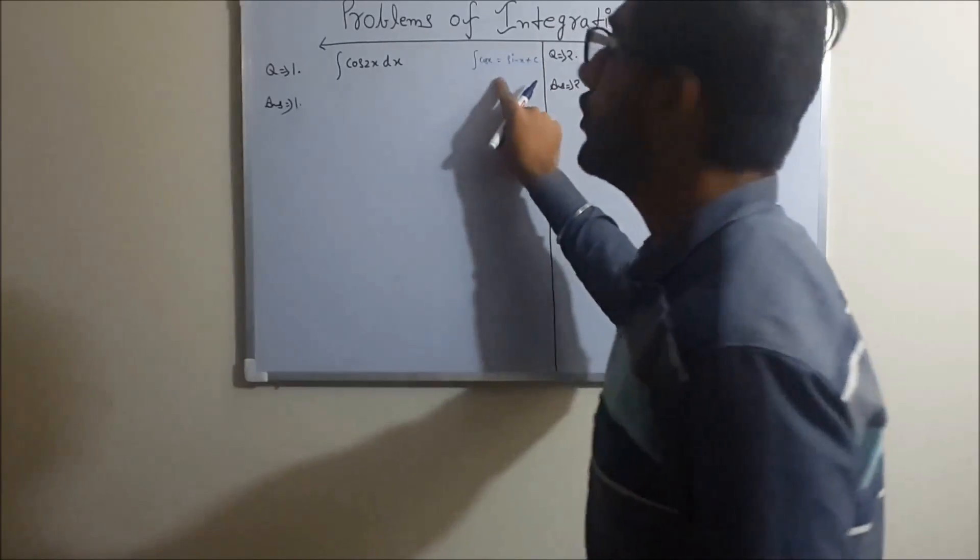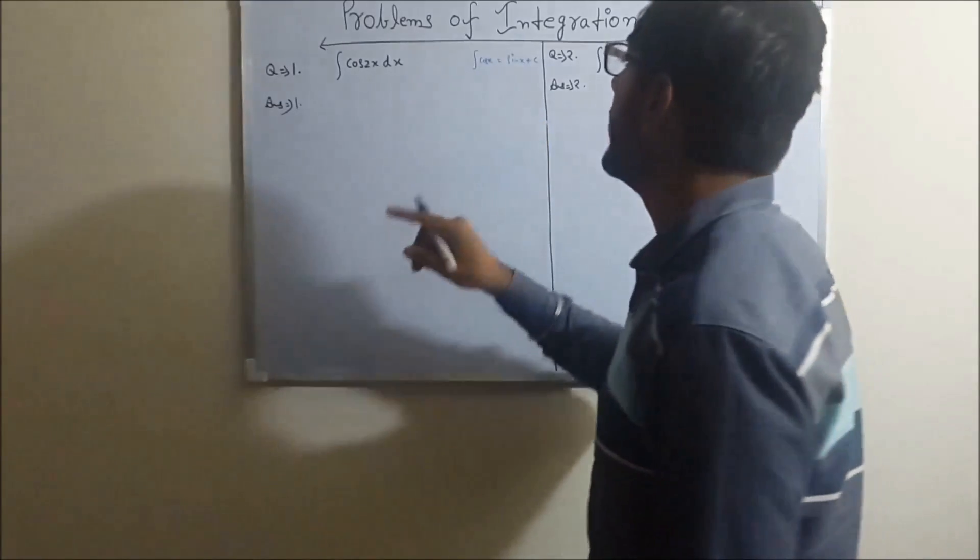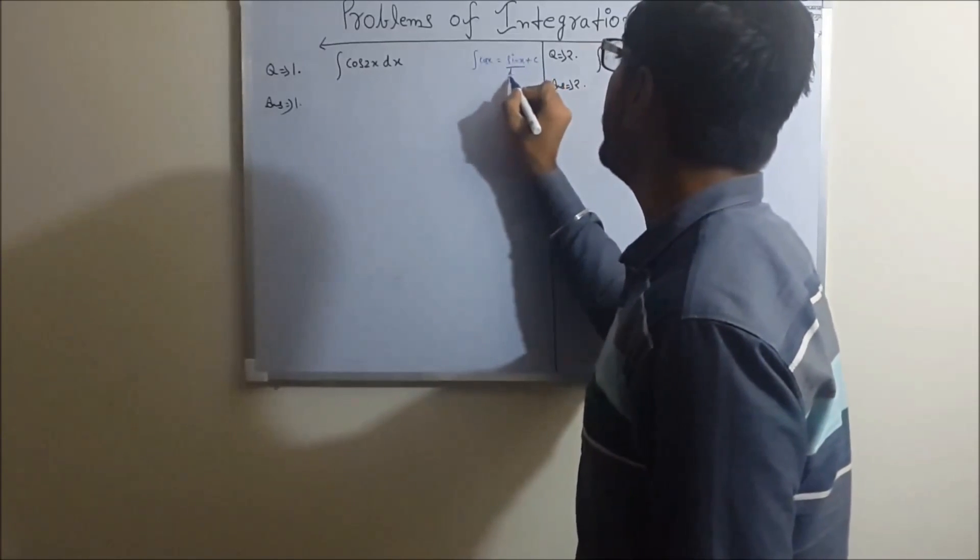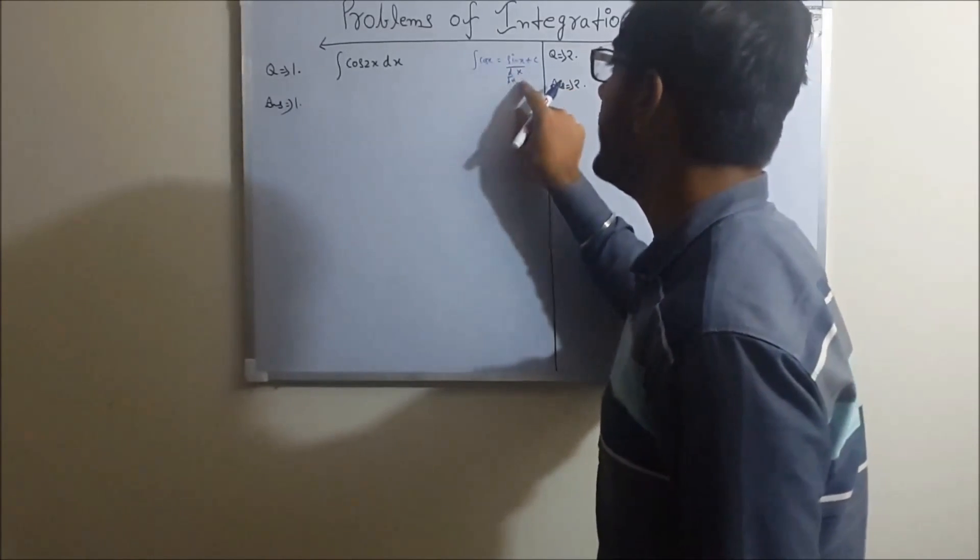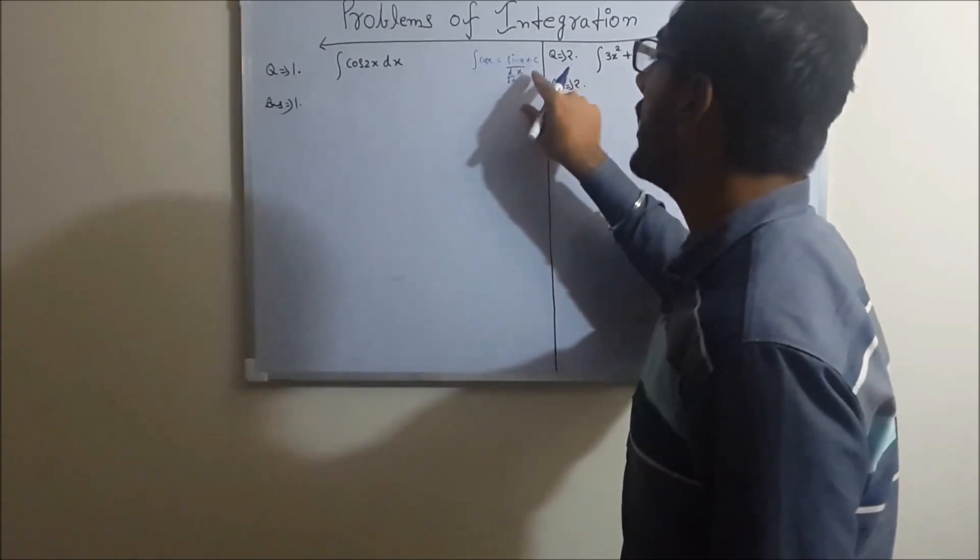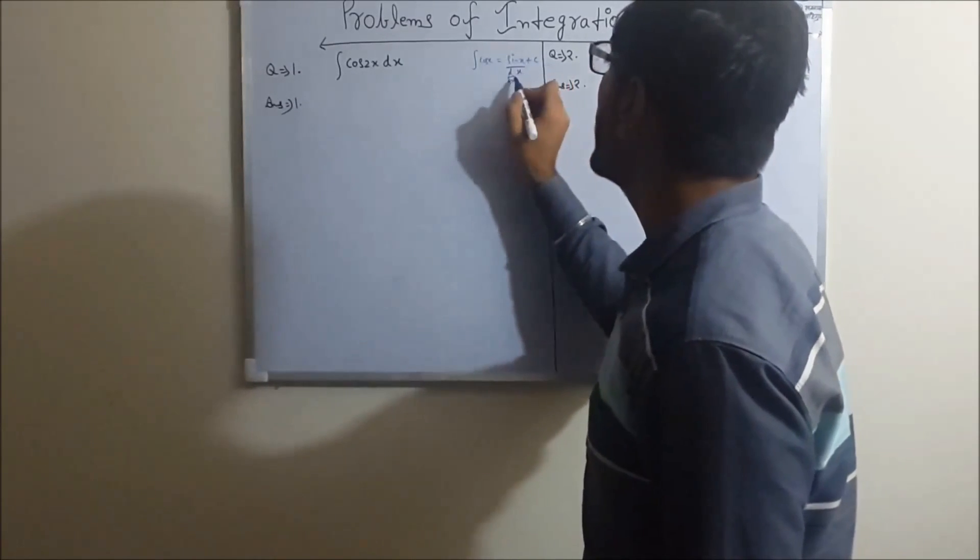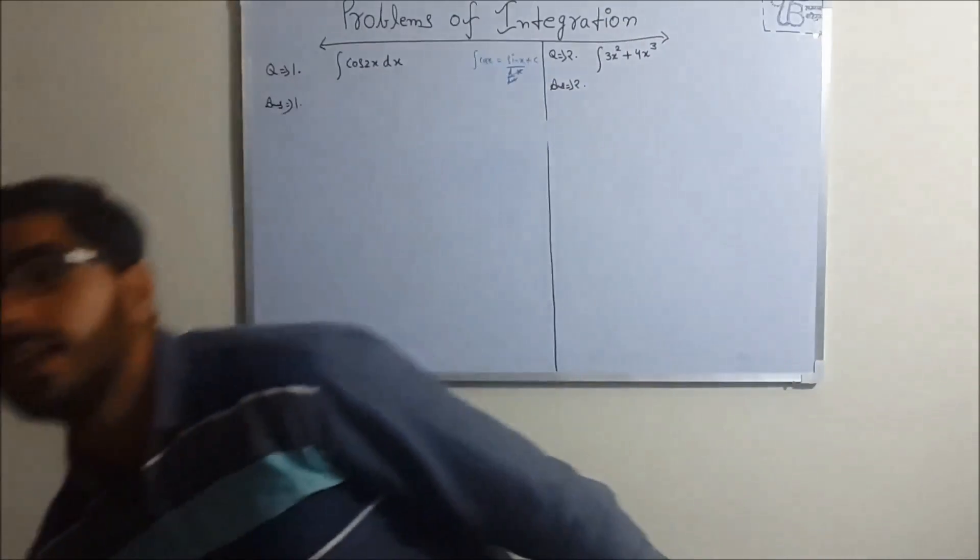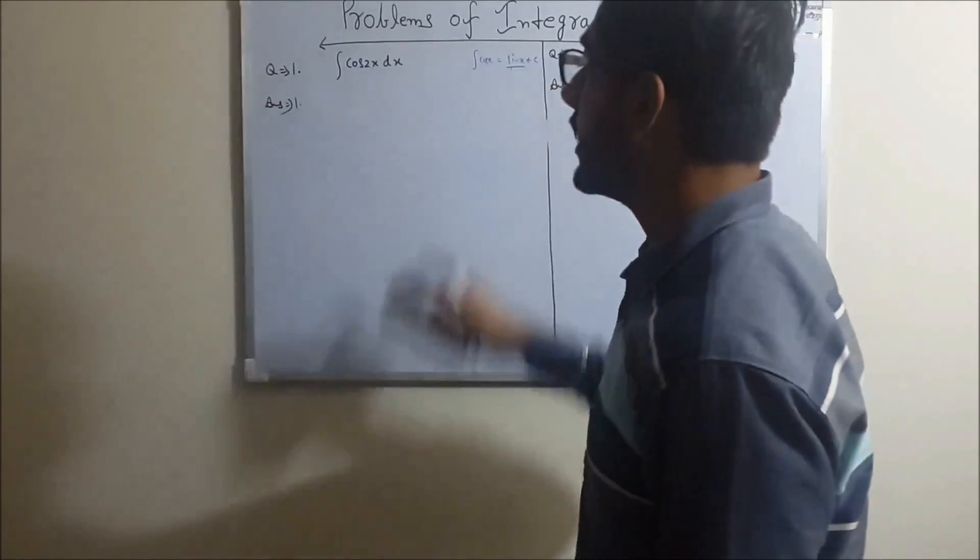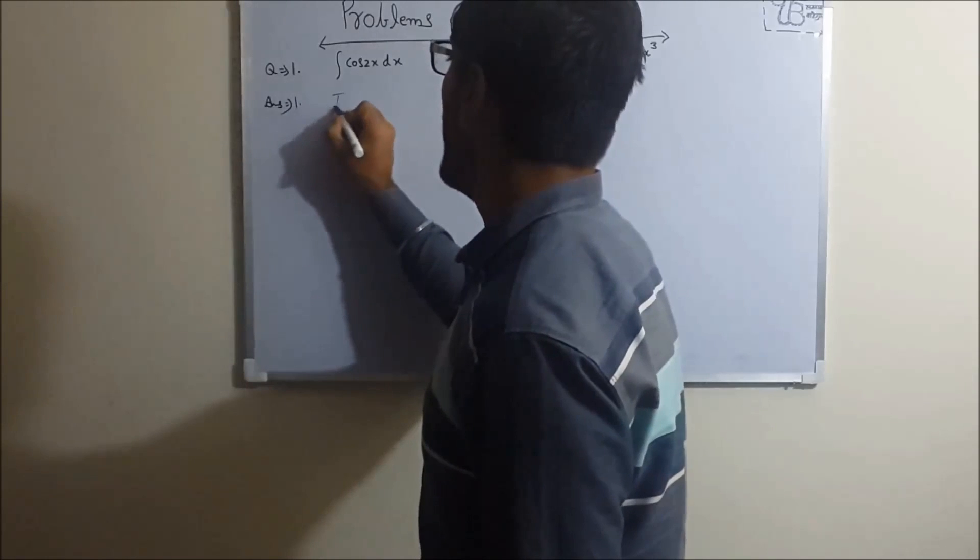So we will use the formula here. This one, you may get it - integration of cos x. Okay friends, this is the formula: integration of cos x equals sin x upon the derivative of x plus c. The derivative of x, dx by dx, gets cancelled. So that's why friends we just write sin x plus c. Remember this.